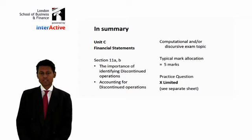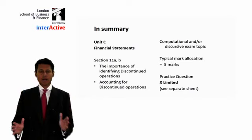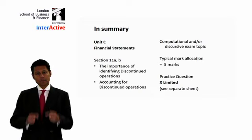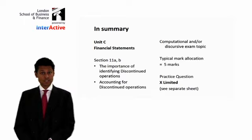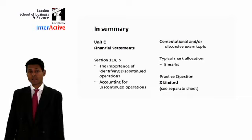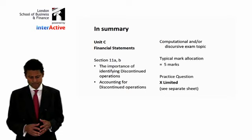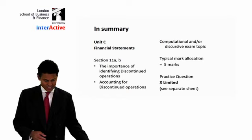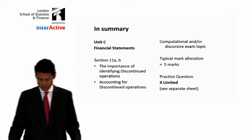The other point is accounting for discontinued operations. Typical mark allocation is around 5 to 6 marks on top of the basic skills. I have a practice question here called X-Limited, and I'll show you a separate sheet where I'll demonstrate how we tackle a question such as this.